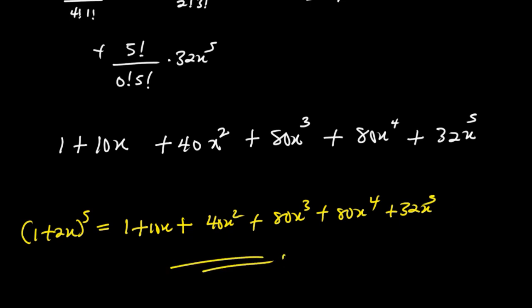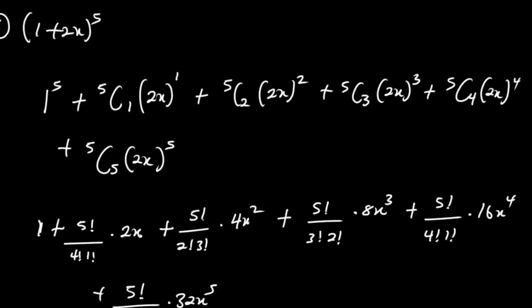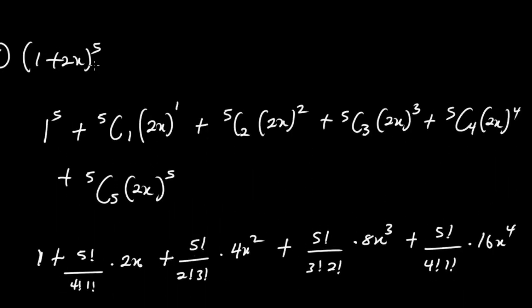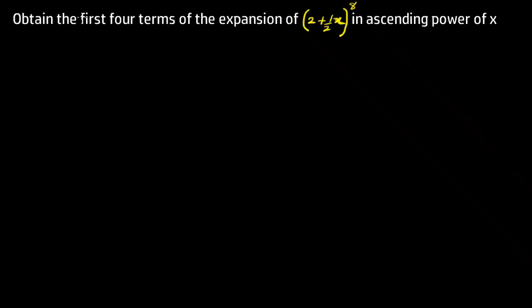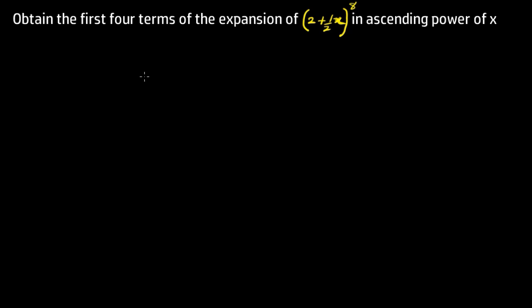Take note: most of the time it will be easier to make 1 the first term. If any value other than 1 appears as the first term, simply factorize and write the expression in the required form. In this second example we are to obtain the first 4 terms of the expansion of (2 + x/2)^8 in ascending powers of x.